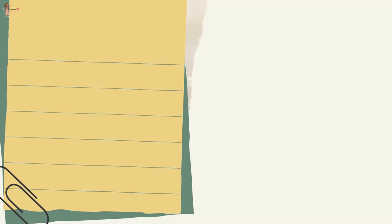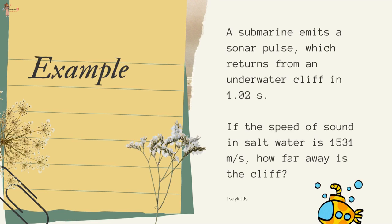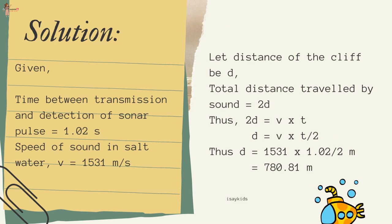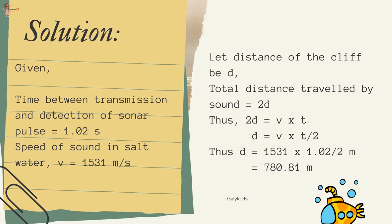Another example: A submarine emits a sonar pulse which returns from an underwater cliff in 1.02 seconds. Speed of sound in seawater is 1531 m/s. Total distance = 2D = V × T; thus D = (1531 × 1.02) / 2 = 780.81 meters. Bats search out prey and fly in the dark by emitting and detecting reflections of ultrasound waves. The high-pitched ultrasonic squeaks of the bat are reflected from obstacles or prey and return to the bat's ear, telling the bat where the obstacle or prey is and what it is like. Porpoises also use ultrasound for navigation and location of food in the dark.